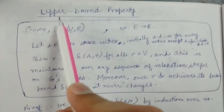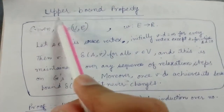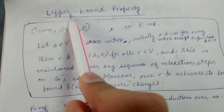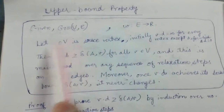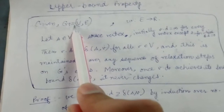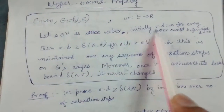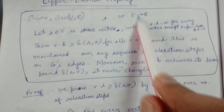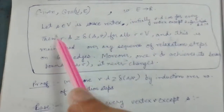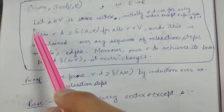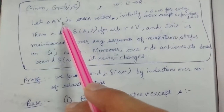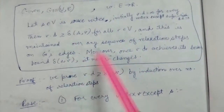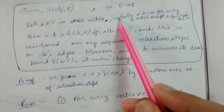We will try to prove another interesting property of the shortest paths, basically called the upper bound property. We are given a graph which is a set of vertices and edges, and a weight function for that graph which maps all the edges to some real number. s belongs to V is our source vertex from which we have to calculate the shortest path to each vertex.